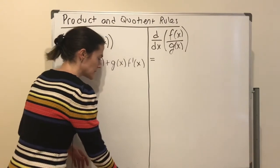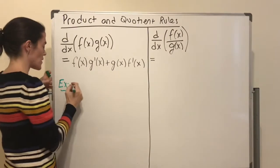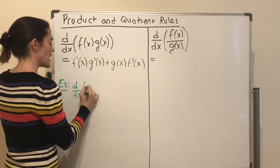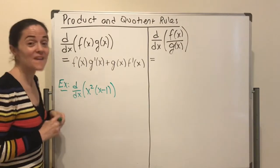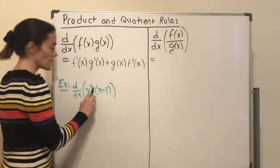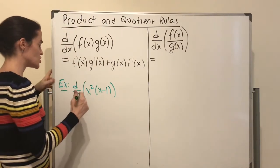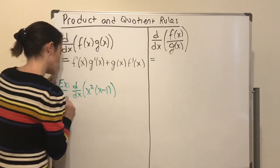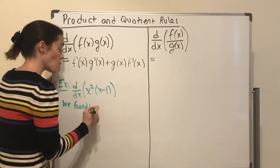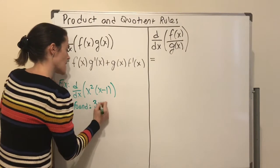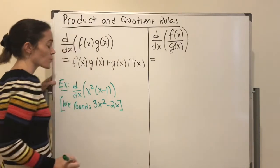Let's look at the example from yesterday's video, which was x squared times (x minus one). We found this just by multiplying through x squared and then using the power rule on each term, which is perfectly fine. We found that this derivative was 3x squared minus 2x. Let's just check this using the product rule.